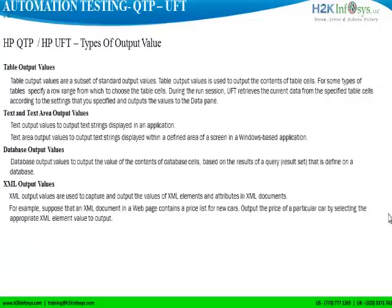The next one is called table output values. This is used to capture any specific row, column, or cell of your table. Suppose there is a table and you need to capture the dynamic values in a certain row or column — the table output values are used.